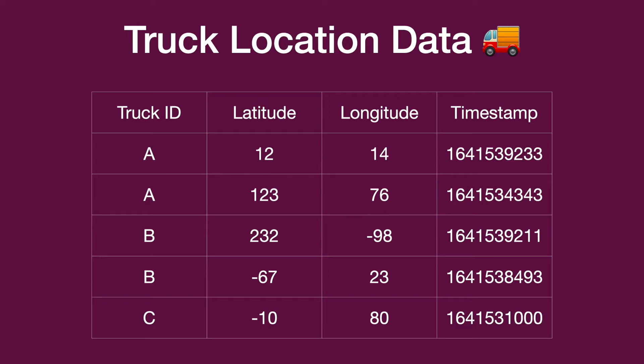The timestamp is when the data was emitted by the truck. Given the nature of a GPS machine, these are going to be emitting a location every few minutes or every few seconds, so over time you will have quite a lot of data for every truck.